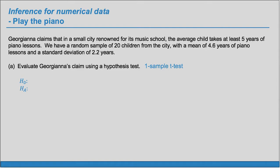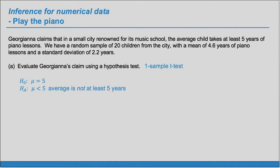The alternate claim is what you need evidence for — you need evidence to prove this. So we need evidence to try to disprove Georgiana's claim. Our alternate hypothesis is going to say Georgiana's wrong: the average is not at least five years. Not at least means less than, so the alternate claim is that mu is less than five.